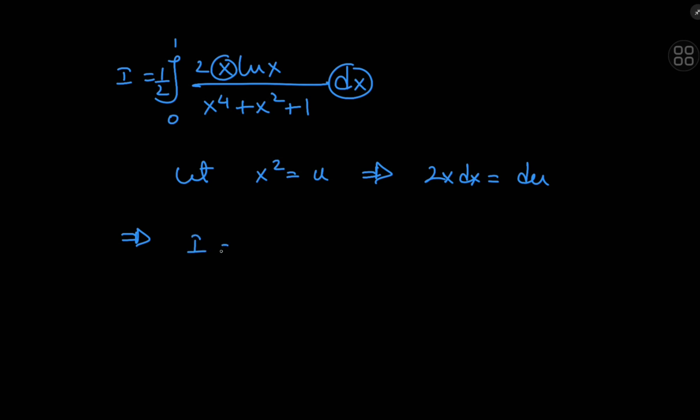So this implies that i is in fact 1 half, the integral still from 0 to 1, as the limits of integration are clearly not bothered by our transformation. And this 2x dx thing turns into a new differential element du, we now have the logarithm of u to the 1 half divided by u squared plus u plus 1.